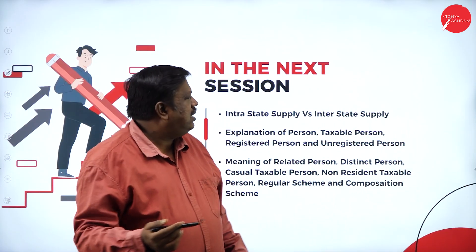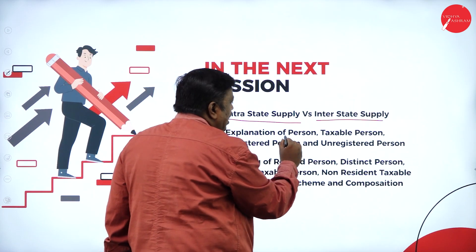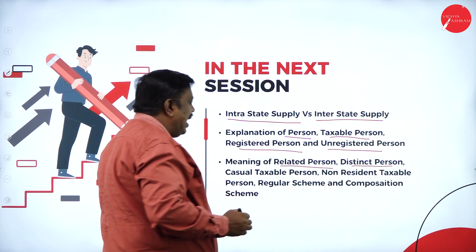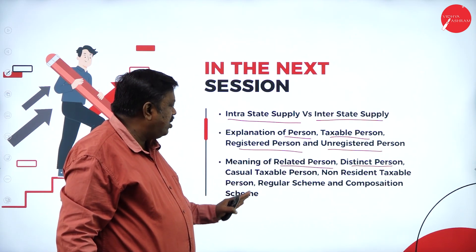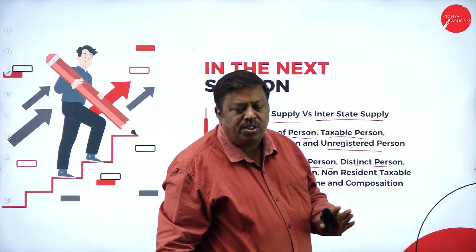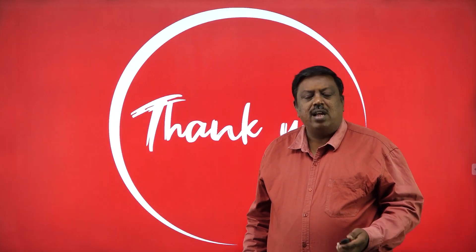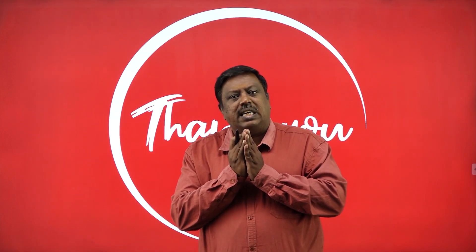In the upcoming session we are going to discuss intrastate supply and interstate supply, and the definitions of taxable person, registered person, unregistered person, related person, distinct person, casual taxable person, non-resident taxable person, and the regular scheme versus composition scheme. These are very important for your examination. Namaste to all 6th MBA students — in today's session we discussed Article 279A and the sections and provisions of the CGST Act 2017. Thank you.